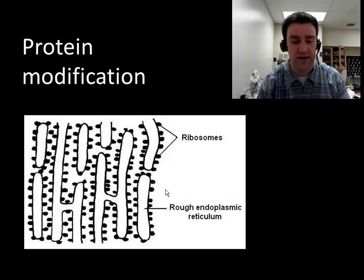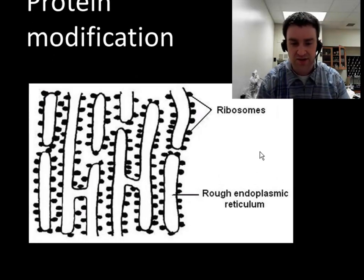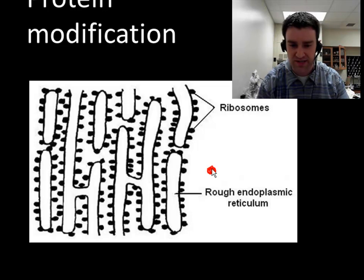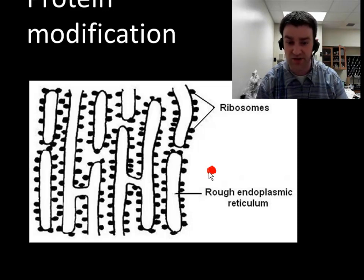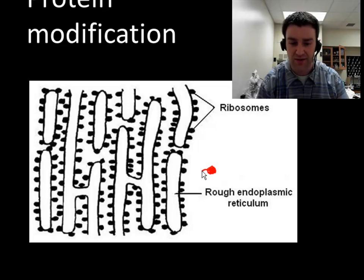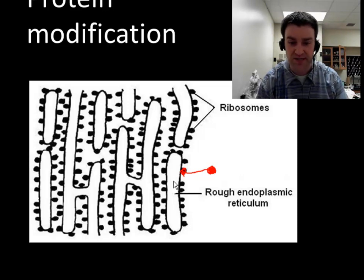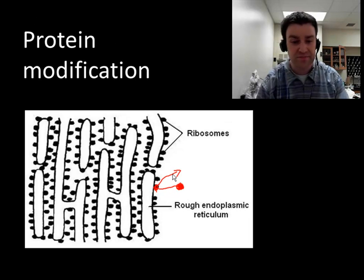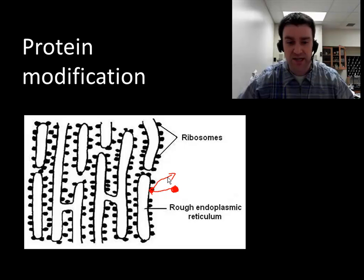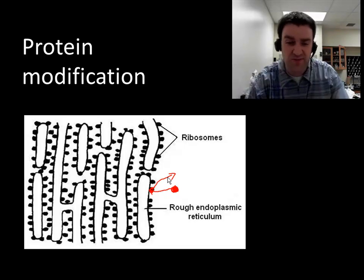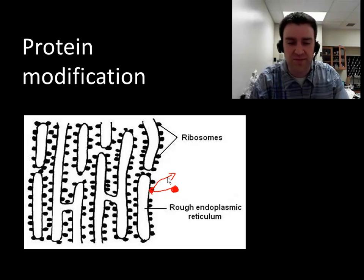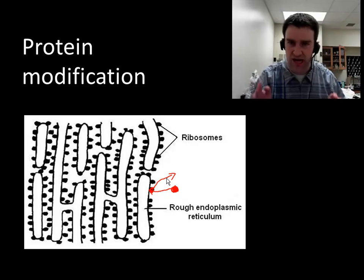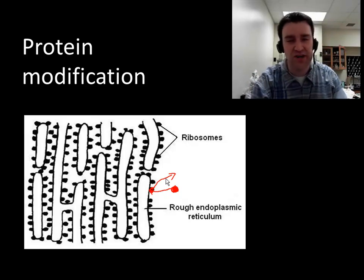Zooming into that area, imagine that initially the ribosome was building the protein in the cytoplasm, and it got the message that it's a particular type of protein — a membrane protein or a secreted protein. So it's going to drag the growing protein over to the endoplasmic reticulum, dock there, finish building it, release the protein into the endoplasmic reticulum, and then the ribosome becomes free again. Inside the ER, modifications happen: other enzymes and proteins might chop off amino acids or add other amino acids.